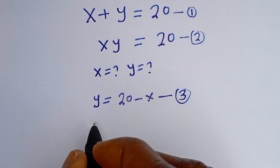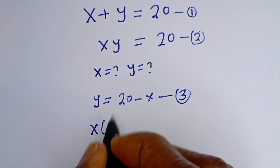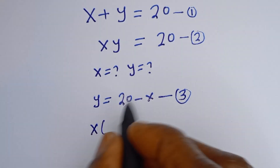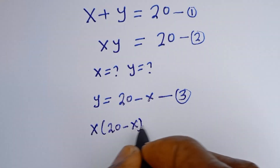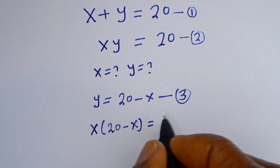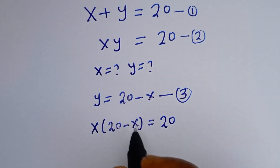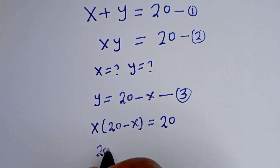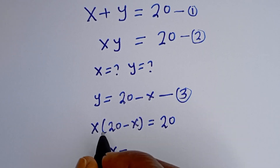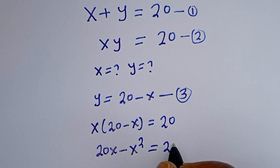Then let's substitute equation 3 into equation 2. That is, S times bracket 20 minus S is equal to 20. Then let's open the bracket: S times 20 is 20S, minus S times S, giving us 20S minus S squared is equal to 20.